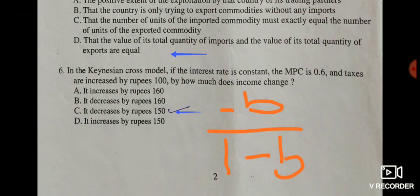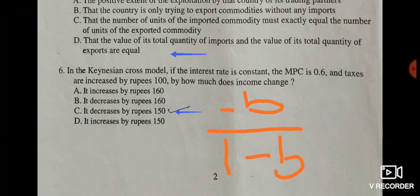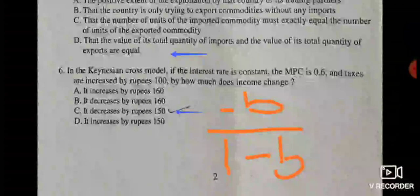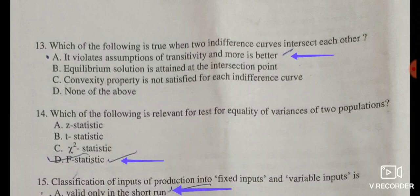With taxes of rupees 100 and a tax multiplier of minus 1.5, the change in income equals 100 multiplied by minus 1.5, which is minus 150. So income decreases by rupees 150, which is given in option C. Option C is the correct answer.